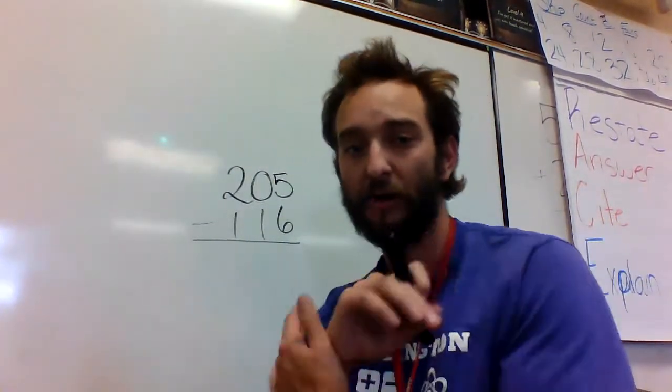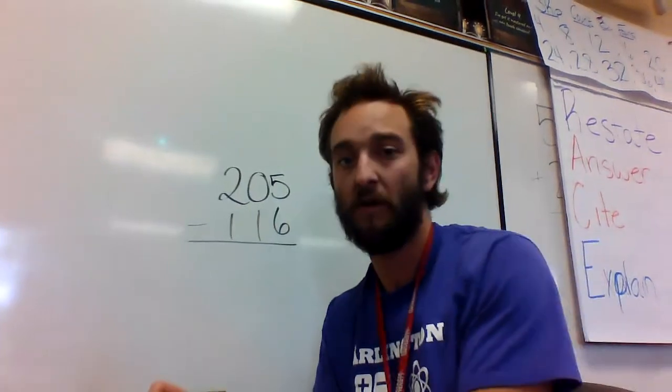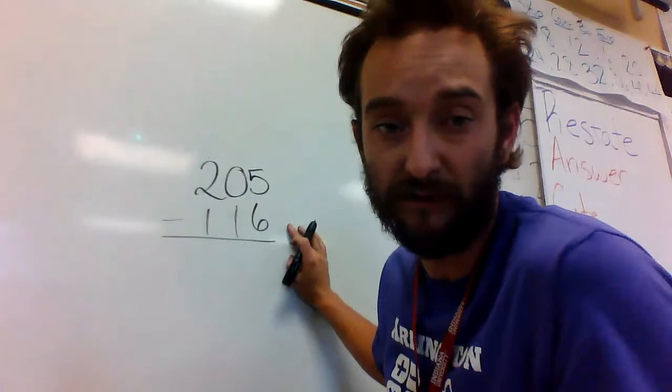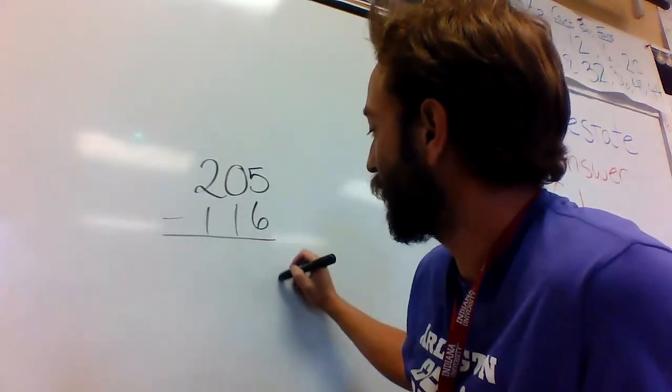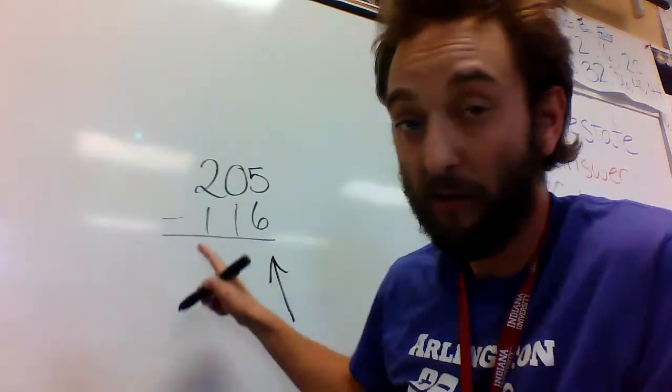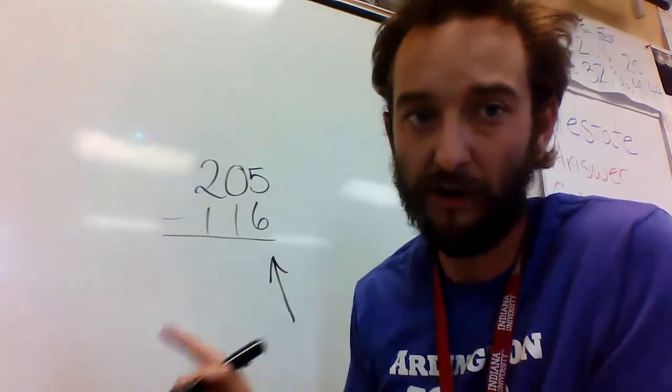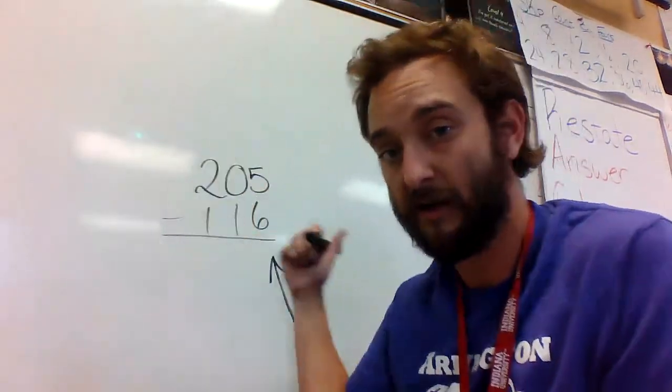Alright, we're going to keep working on some subtracting with regrouping, but this one there's something special and different we're going to look at. So I have 205 minus 116. I start on the one side. You've got to always start on this side. Even though I think I know this answer, it's probably going to change because of regrouping. So you have to start on the right hand side.